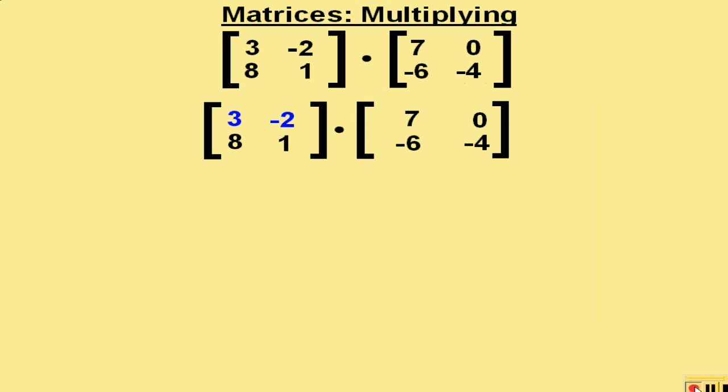The first step in multiplying is to look at the first row of the first matrix. What we will do is flip those numbers as follows. And then multiply 3 times 7 plus negative 2 times negative 6. And that becomes the first number in our answer matrix.